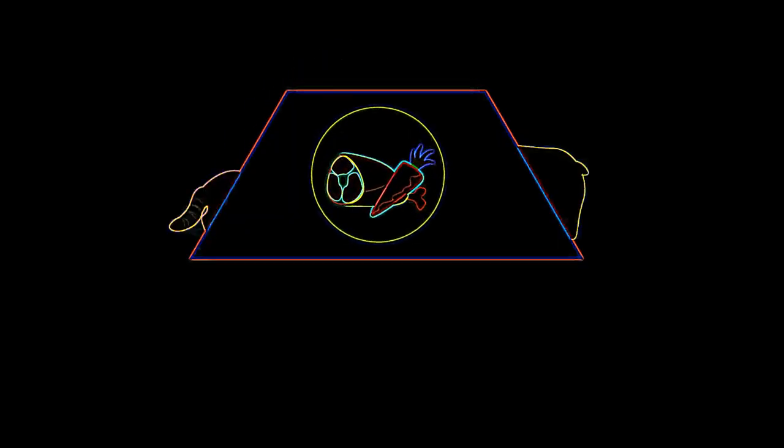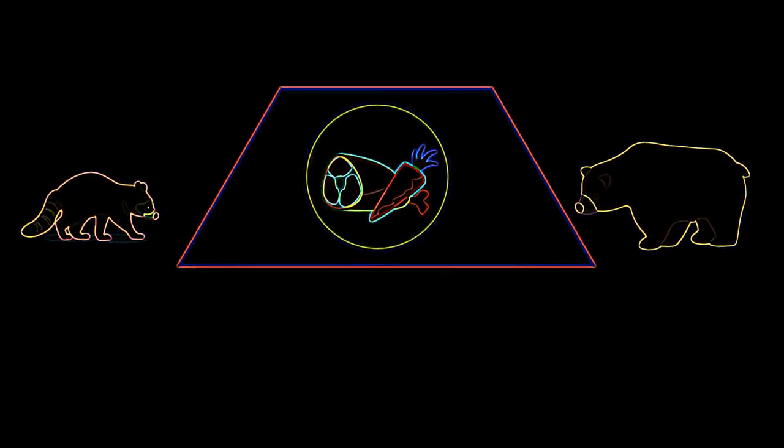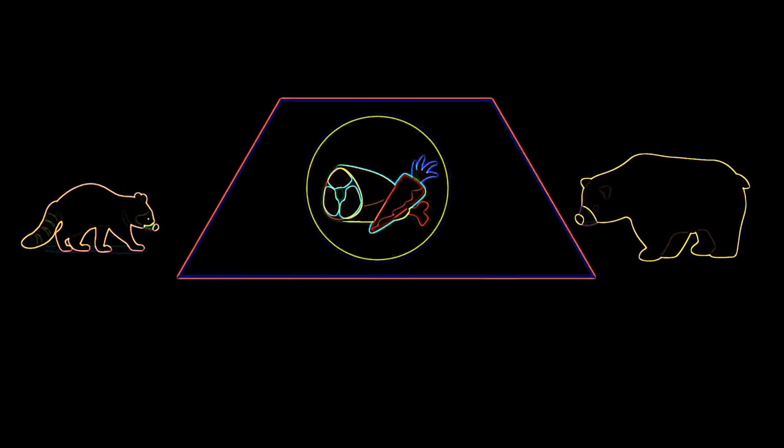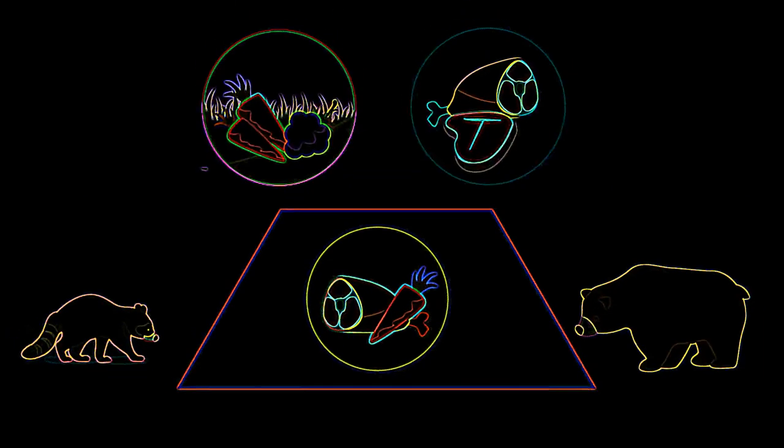If you said the intermediate trophic level, or the one that contains omnivores, you're right! Omnivores tend to eat a much wider variety of organisms than either of the other two trophic levels. This variety in their diets leads to them having more direct interactions than other trophic levels.